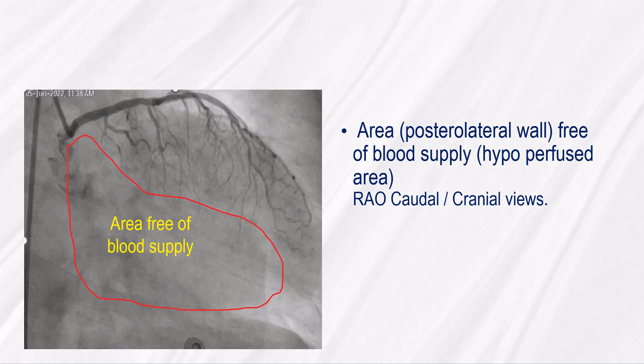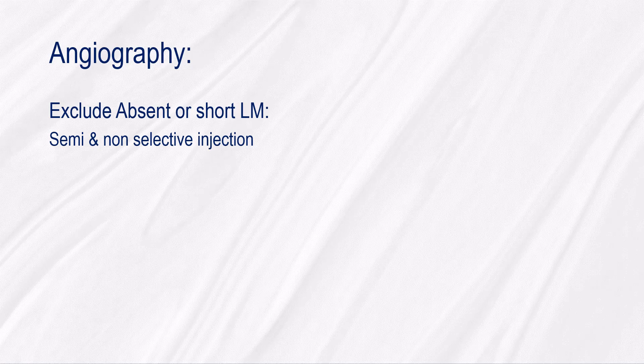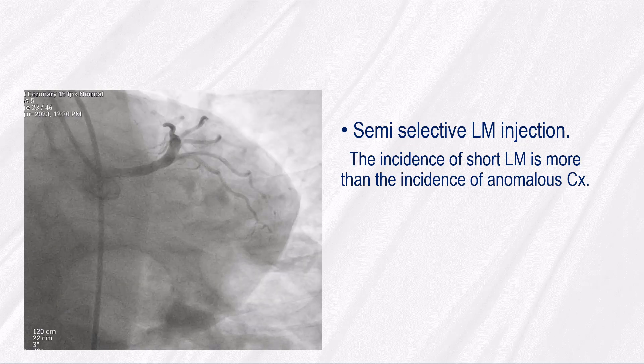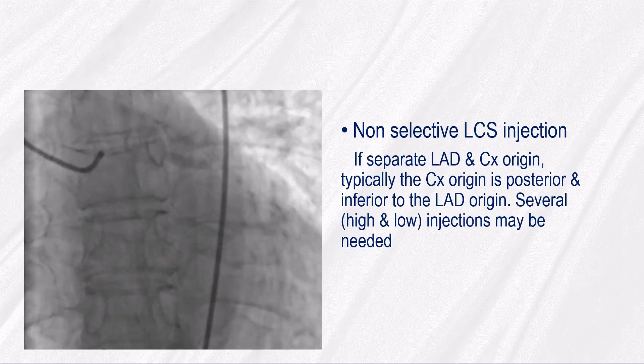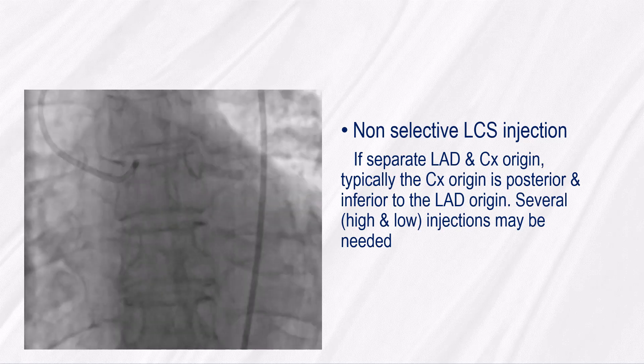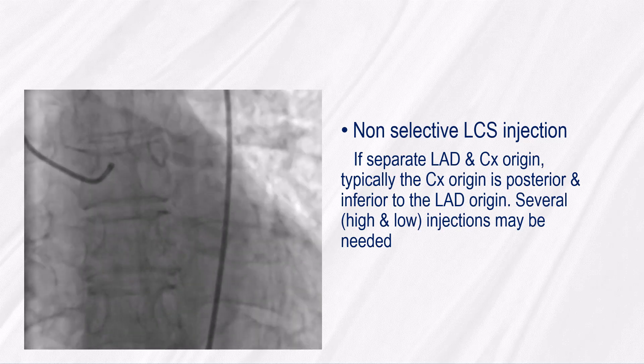Absent CX from the left system should be highly suspected if there is a hypoperfused area in the posterolateral wall, free of blood supply, in the RAO caudal or cranial views. Since instances of absent left main or short left main are more common than anomalous CX, they should be excluded with semi and non-selective injections. A semi-selective injection will exclude or confirm a short left main. Absent left main with separate origin of LAD and CX will appear with a non-selective injection. Typically, the CX origin is posterior and inferior to the LAD origin.